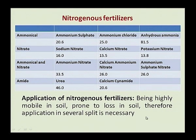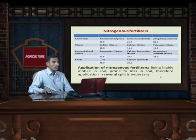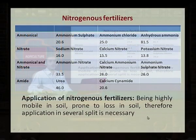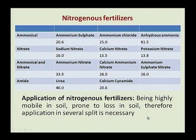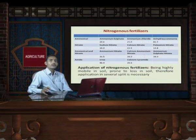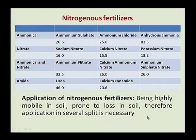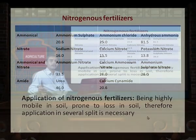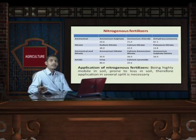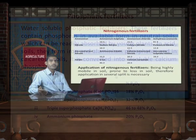How to apply nitrogen fertilizer is important because nitrogen is very mobile in the soil, so leaching losses are high. We have to apply nitrogen in split doses — not all at once, but during different growth stages — so that it meets the nitrogen needs of the plant at each stage and is not lost to the soil.